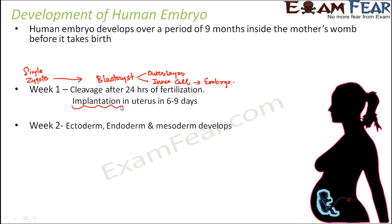By week 2, ectoderm, endoderm, and mesoderm develop. These are the three germ layers. These layers are made up of cells which are capable of differentiating, and that is how they divide and differentiate to form different tissues and different organs of the body. These three layers form by week 2.